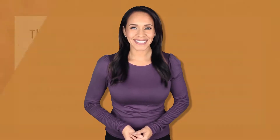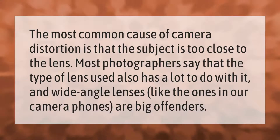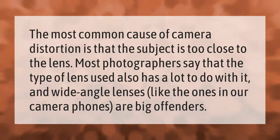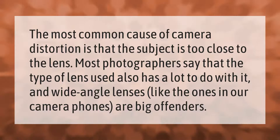The most common cause of camera distortion is that the subject is too close to the lens. Most photographers say that the type of lens used also has a lot to do with it, and wide-angle lenses like the ones in our camera phones are big offenders.